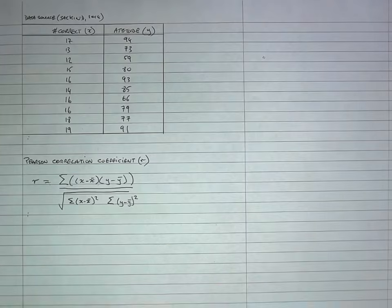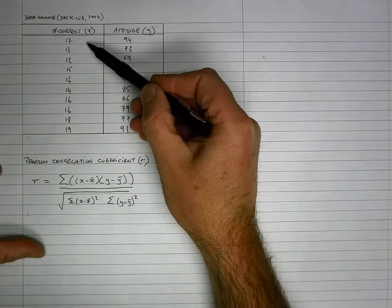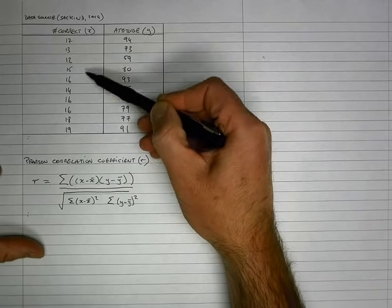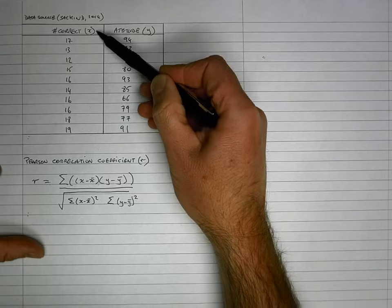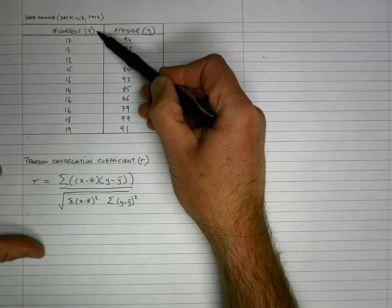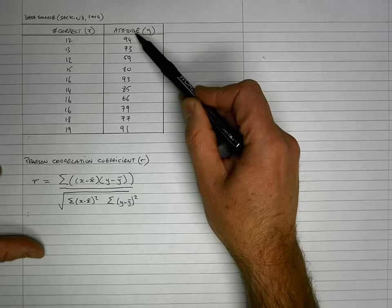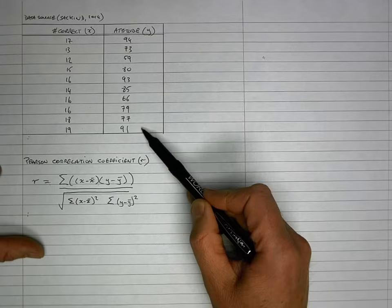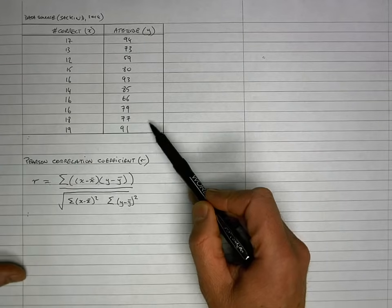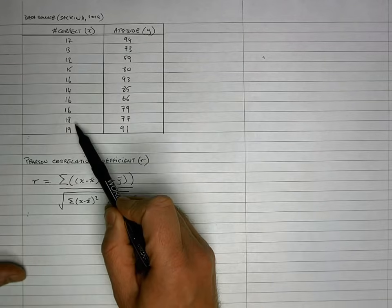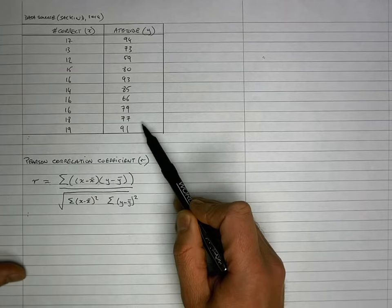First of all, let's take a look at some sample data. Over here on my left-hand side, I've got the results for 10 students who have taken a test where 20 questions are asked, and these are the number of questions that were correct — I'm going to designate that as my X series of values. My Y values are the score for the attitudes to taking tests by the same 10 students, with a maximum value of 100. I'd like to determine if there's a correlation between the number of questions a student gets correct and their attitude to taking tests in the first place.